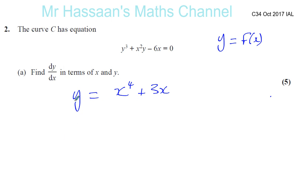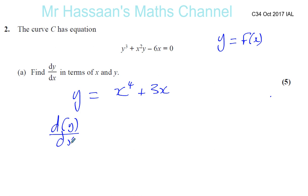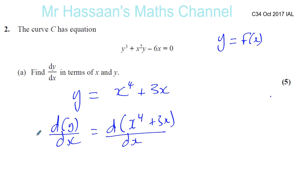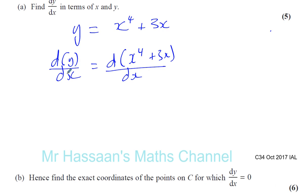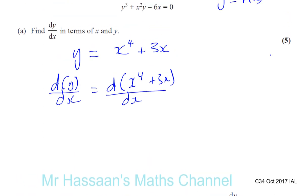This is where you have a function of y which is expressed explicitly — y is explicitly in terms of x. What we're actually doing is differentiating both sides with respect to x. So we differentiate this side with respect to x and we differentiate this side with respect to x. We're doing the same thing to both sides.